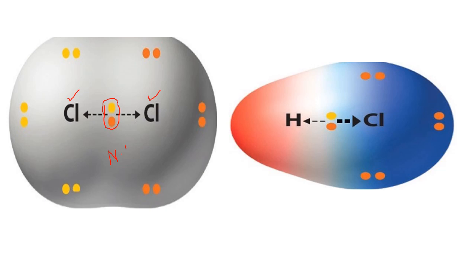If I talk about a polar covalent bond, I have taken two atoms: hydrogen from group number 1 and chlorine from group number 17. As we move from left to right in a period, electronegativity value increases. So hydrogen has a lower electronegativity value compared to chlorine. The shared pair of electrons will be attracted more towards chlorine than towards hydrogen. That is why the electron density (dumbbell shape) is more prominent on the chlorine side. This type of bond is known as a polar covalent bond, where one atom has a higher electronegativity value than the other.